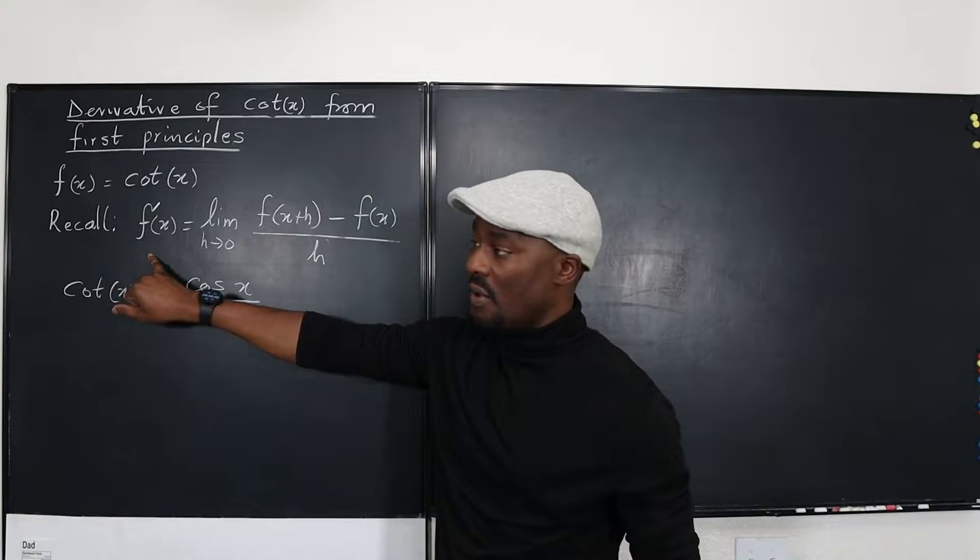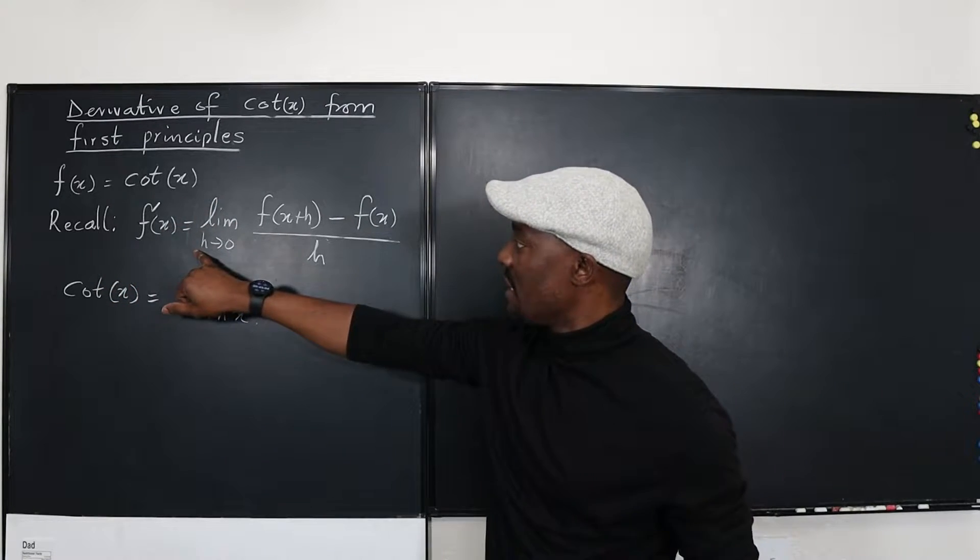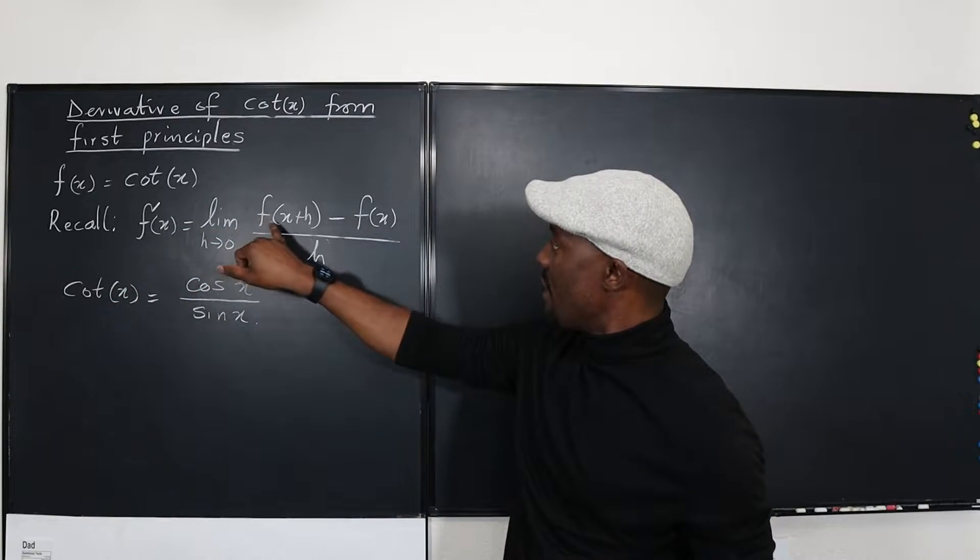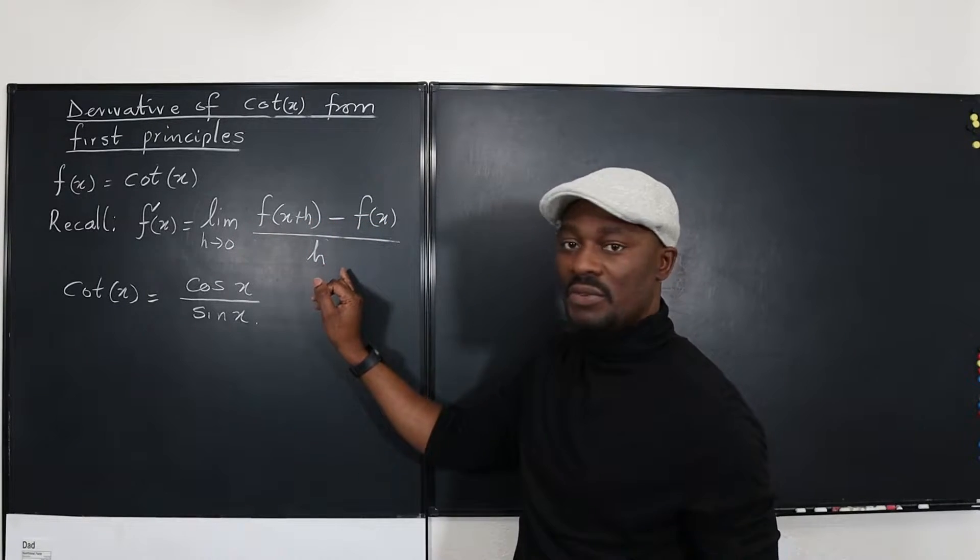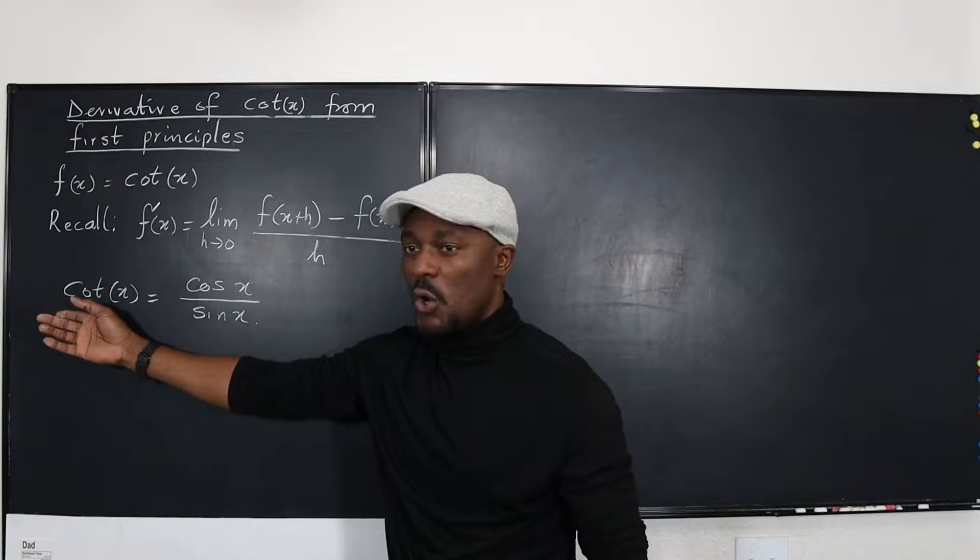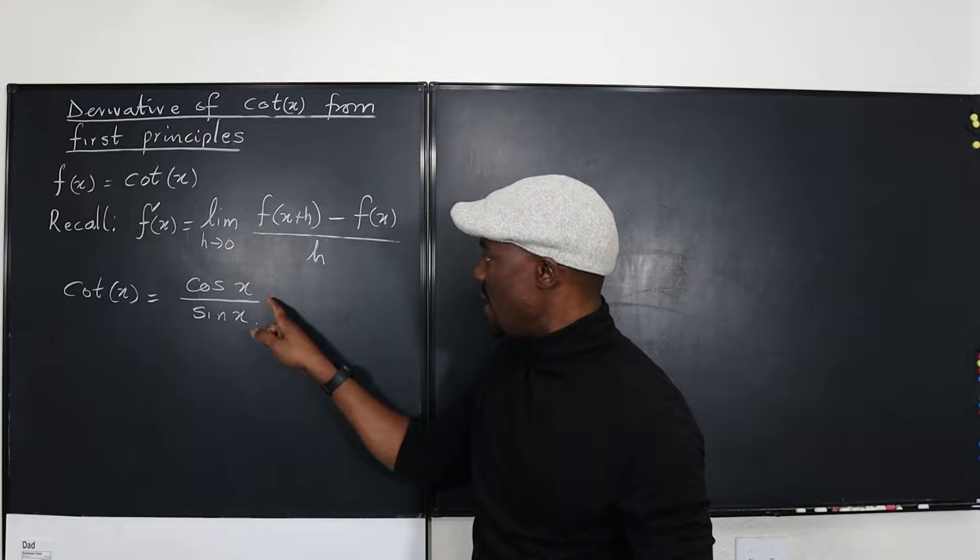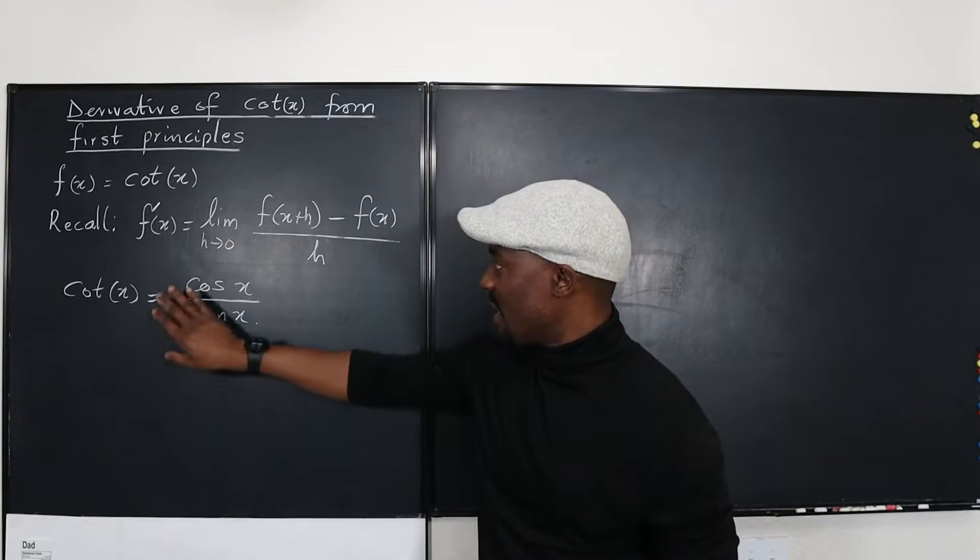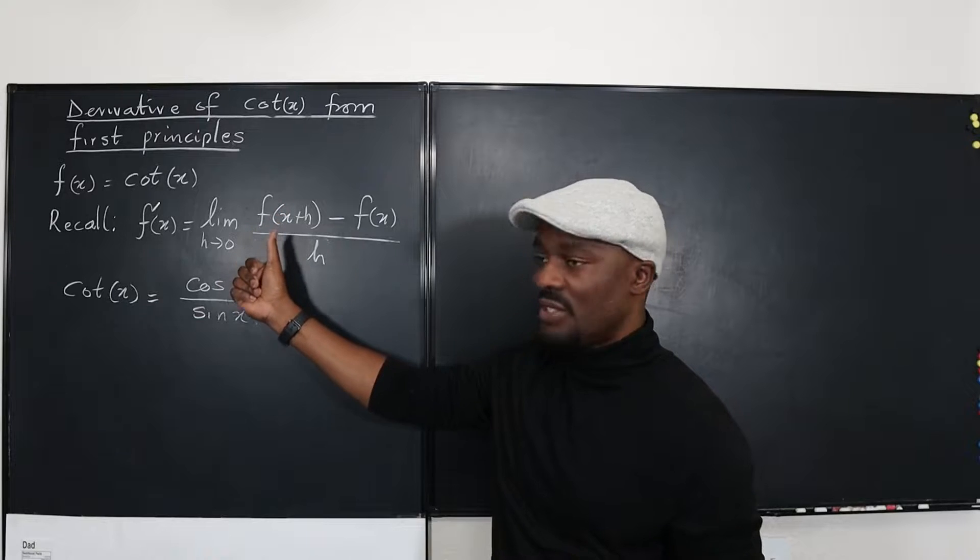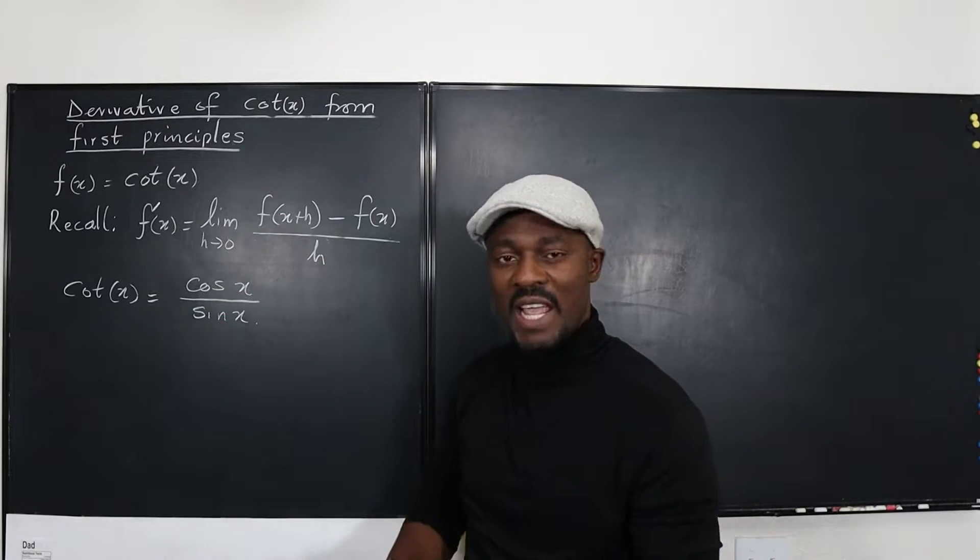The derivative of any function must be given as the limit as h goes to zero of f of x plus h minus f of x over h. So firstly, what is cotangent? What does it mean? Well, it's the ratio of cosine to sine. And that's the definition we're going to use now for this derivative. So let's just go ahead and start.